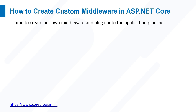Middleware is the new pipeline for the request in ASP.NET Core. Each piece of the middleware can process part or all of the requests and then either choose to return the result or pass it down to the next piece of middleware. If you want to execute your own logic for things like authentication, authorization, or maintaining application log information, you can use custom middleware.